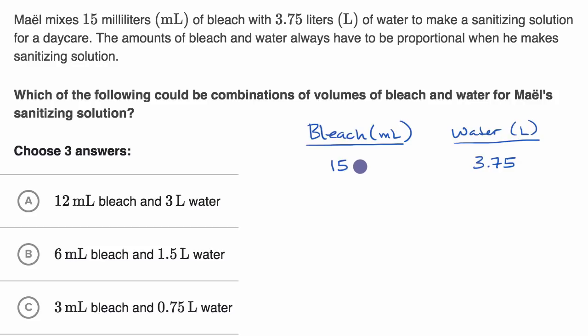So what is the proportionality constant here? If you said the water is equal to some constant times the bleach, well what's going on? Well, let's see, what would he have to multiply by? He would have to multiply by 3.75 over 15. Now what is 3.75 divided by 15?